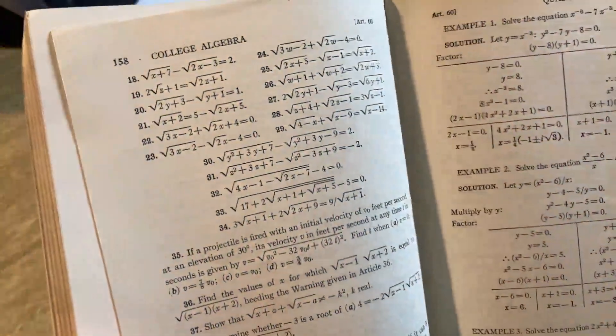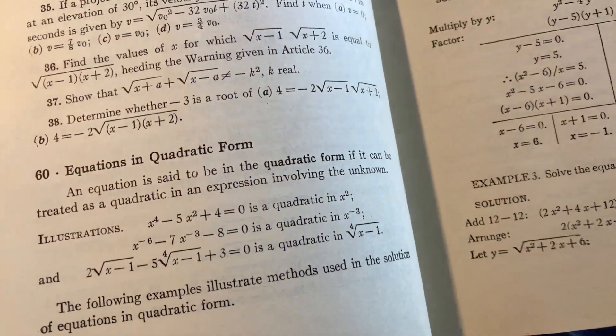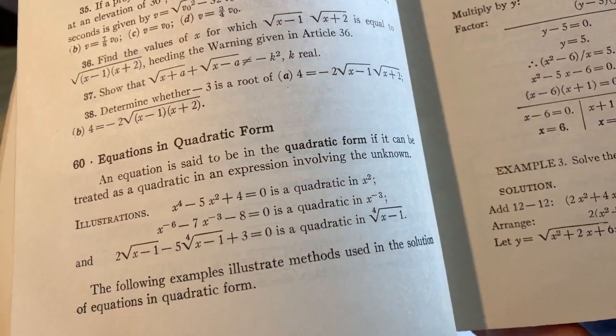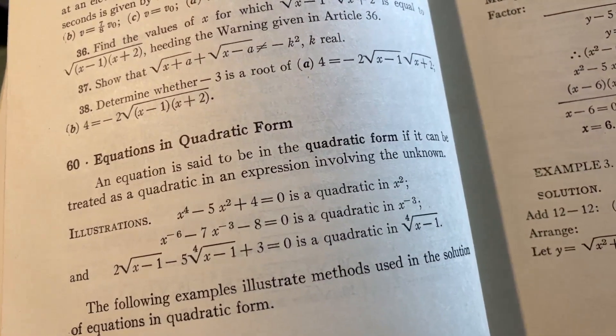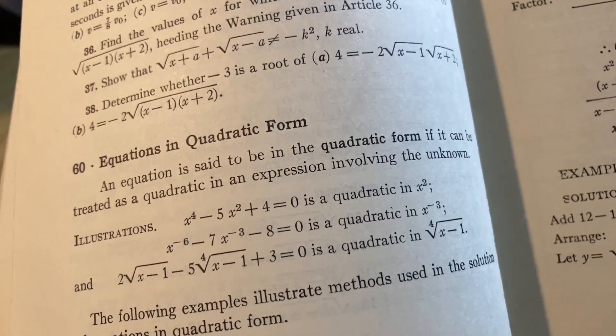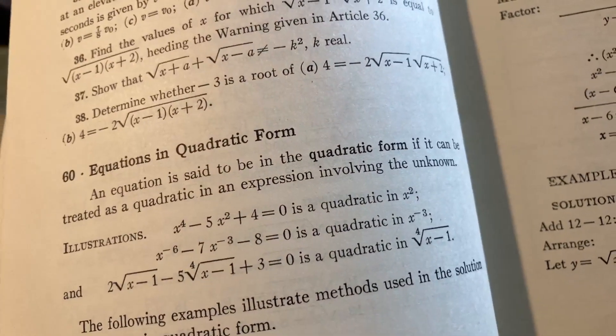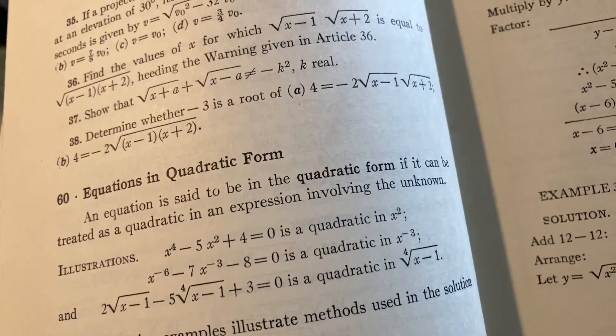But tons of mathematics. Look at these. Look at these equations. Just really cool. Really wonderful. Here's equations in quadratic form. So this is something you study in college algebra. You have a couple examples here. X to the fourth minus 5X squared plus 4 equals 0 is a quadratic in X squared. And then the next one's a quadratic in X to the negative 3. And the third one is harder. It's a quadratic in the fourth root of X minus 1.